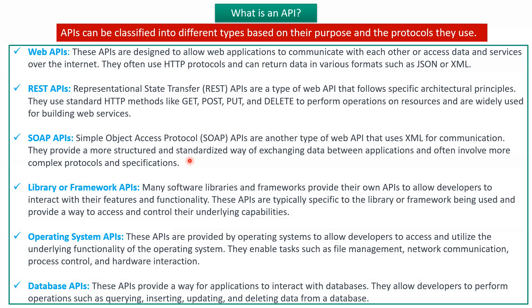The third one is SOAP APIs. SOAP APIs are another type of web API. SOAP API uses XML for communication and provides a more structured and standardized way of exchanging data between applications. SOAP APIs involve more complex protocols and specifications.